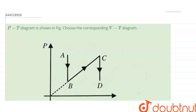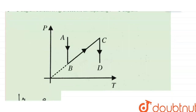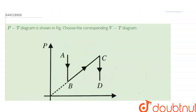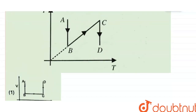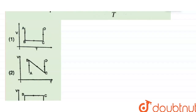Hello everyone. The question is: a PT diagram is shown in the figure — choose the corresponding VT diagram. In this diagram, they are giving the graph between pressure P and temperature T. The graph goes from A to B, then B to C, and C to D, and we have to make a volume-temperature graph. I will draw the graph with temperature on the x-axis and volume on the y-axis.